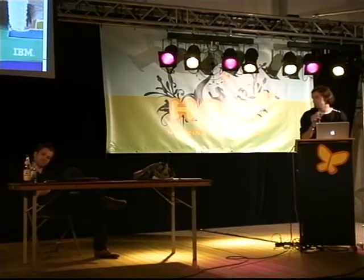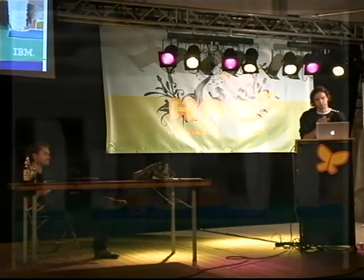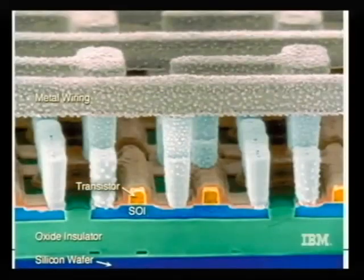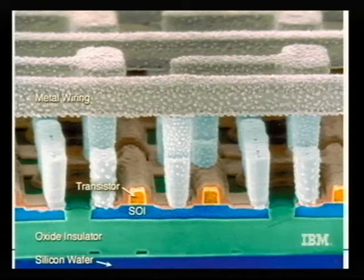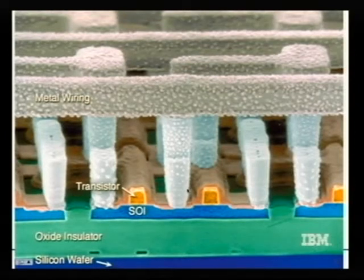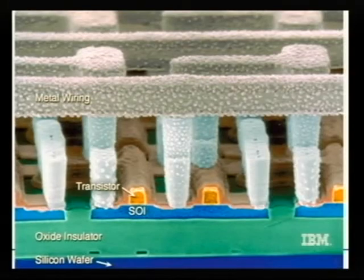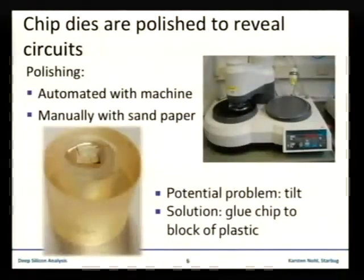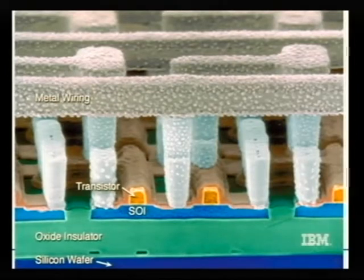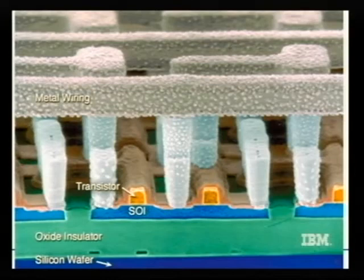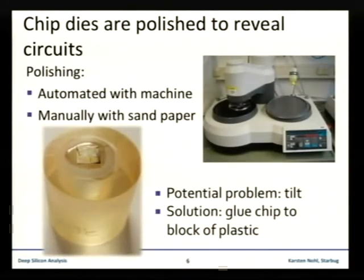To understand the next steps, first let's look at how such a chip looks. We start at the bottom — it's a bare silicon wafer. On top it begins with a transistor layer, with gate, source, and drain. Those transistors are connected on higher levels, on higher layers called the metal layers, with metal wires. As Carsten already mentioned, our work is to polish to each individual layer, make photos, and then try to find out the function of the implemented crypto algorithm or something like that.